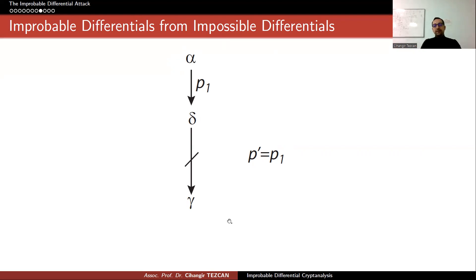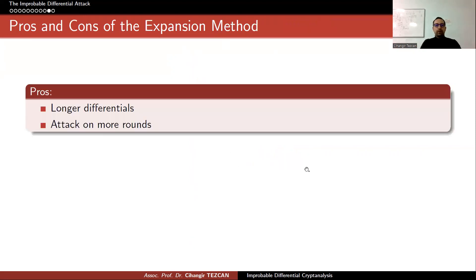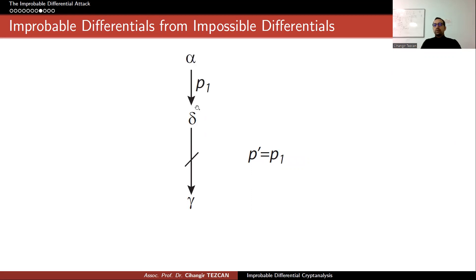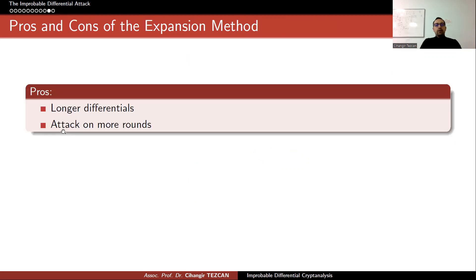What is the benefit of using this expansion method? You can have longer differentials. At the impossible case you have a fixed number of rounds, but maybe you want to attack more rounds so you can construct a longer distinguisher. When you have longer differentials, you add more rounds and can attack more rounds.